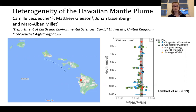Our project applies this to the Hawaiian mantle plume by using lower crustal cumulates brought to the surface during the Hualalai eruption in 1800, to provide an insight into the sub-volcanic system and to test whether Hawaiian lower crustal cumulates also reveal greater heterogeneity than their corresponding lavas.